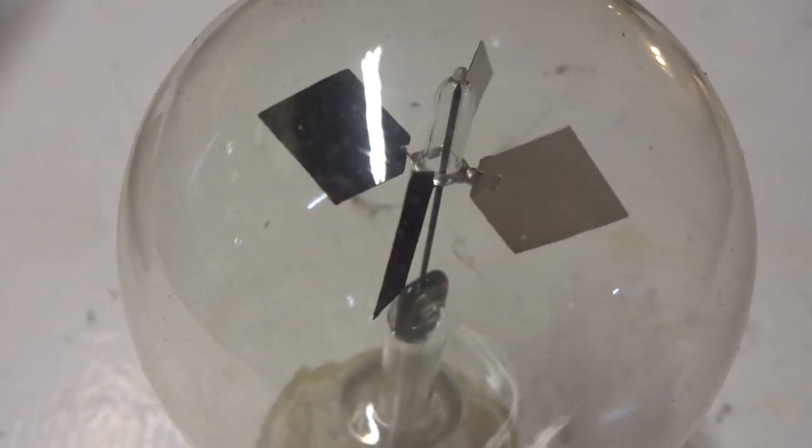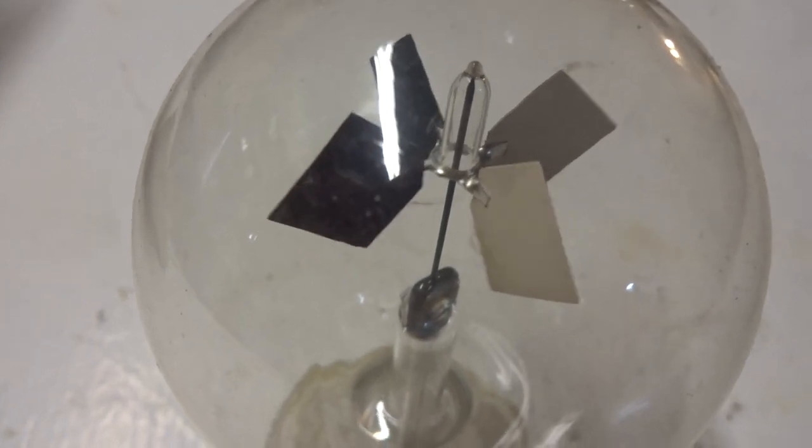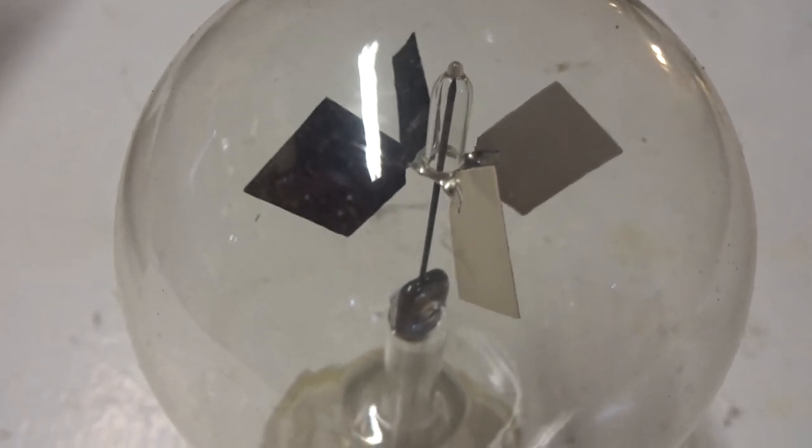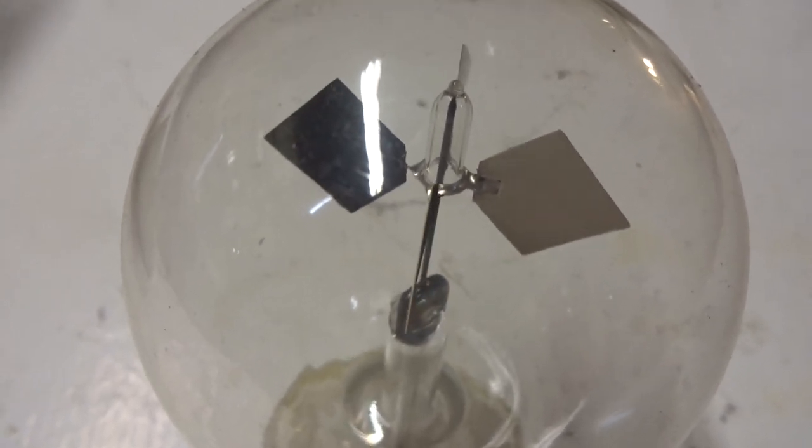The radiometer is under a partial vacuum with some inert gas called argon.